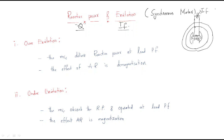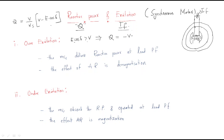First case: over-excitation. The reactive power formula for the synchronous motor is Q = (V / Xs) × (V − E·cos δ), where V is terminal voltage, Xs is synchronous reactance, and δ is the load angle. If over-excited, E·cos δ is greater than V. Substituting into the equation, we get Q is negative — the reactive power is negative.